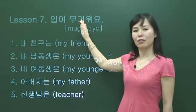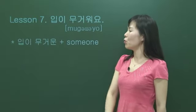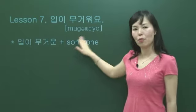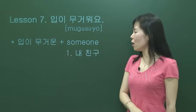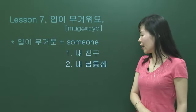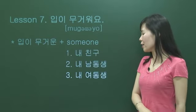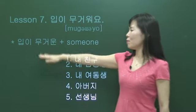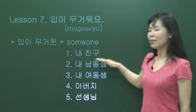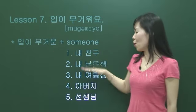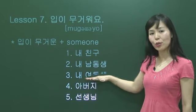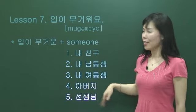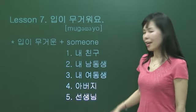This is a predicative verb, so let's make a modifier form. 입이 무거운, someone. 입이 무거운 내 친구, 입이 무거운 내 남동생, 내 여동생, 입이 무거운 아버지, 입이 무거운 선생님.